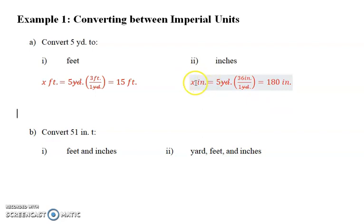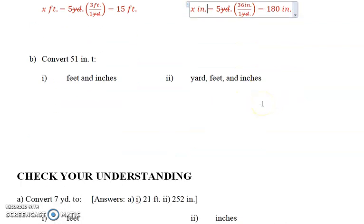So remember, what you're looking for is X, an unknown amount inches, is equal to 5 yards, what you're given. Multiply by the conversion factor, and you can have more than one conversion factor. We'll get there, and that's equal to 180 inches. Next one is we're going to convert 51 inches, and I should say to feet and inches.